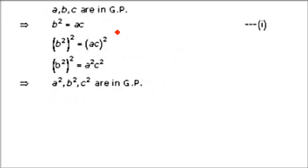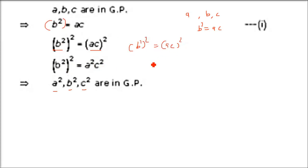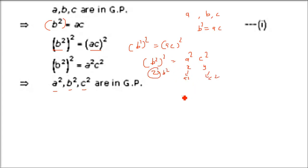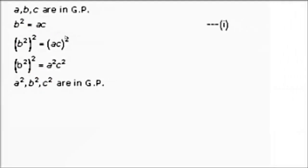If A, B, C are in GP then B² = AC. Sub-part 1: A², B², C² are also in GP. Just square both sides: (B²)² = (AC)² = A²·C², so B² whole square = A²·C², meaning A², B², C² are in GP. Sub-part 2: A³, B³, C³ are in GP. Write (B³)² = B⁶ = (B²)³ = (AC)³ = A³C³, so B³ whole square = A³C³, confirming A³, B³, C³ are in GP.